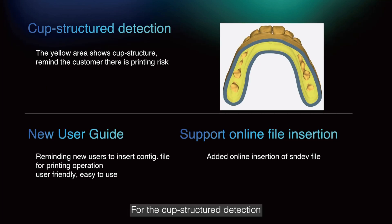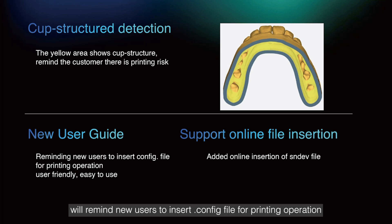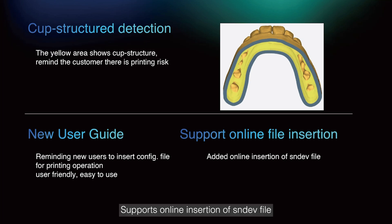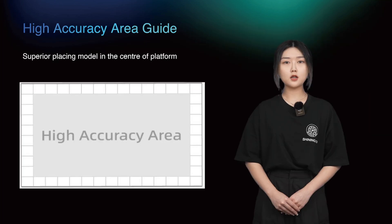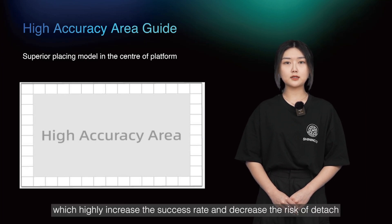For the cup structure detection, the yellow area shows the cup structure, reminding customers there is a printing risk. A user-friendly new user guide will remind new users to insert a config file for printing operation, supporting online insertion of SMDV files. We have also added a high-accuracy area guide in the center of the platform, which highly increases the success rate and decreases the risk of detachment.